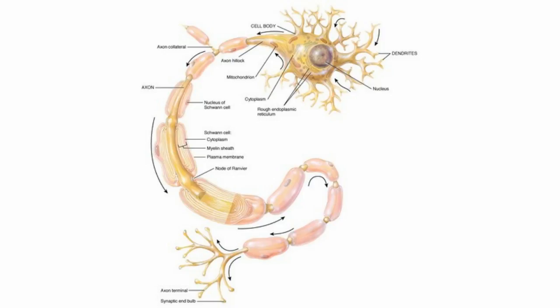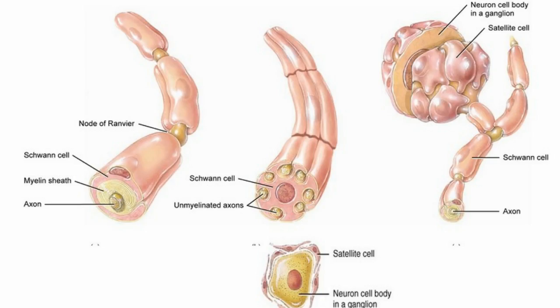Usually the axon is a long fiber which carries messages away from the neuron, and dendrites are small branchings responsible for receiving messages from the outer environment.